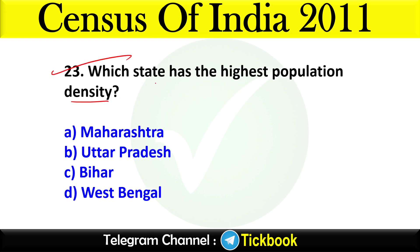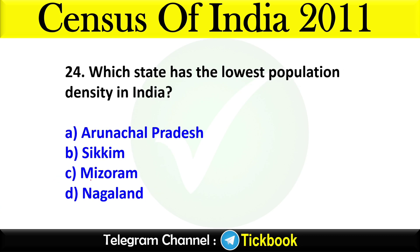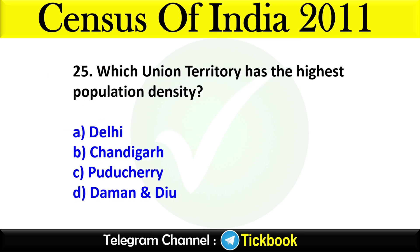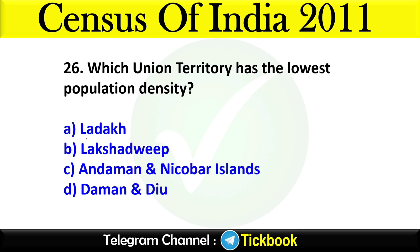Question twenty-three: Which state has the highest population density as per Census 2011? Option number C is the right answer: Bihar. Question twenty-four: Which state has the lowest population density in India? Option number C: Bihar. Question twenty-five: Which union territory has the highest population density? Option number A: Delhi is the right answer. Question twenty-six: Which union territory has the lowest population density? Option number C: Andaman and Nicobar Islands.